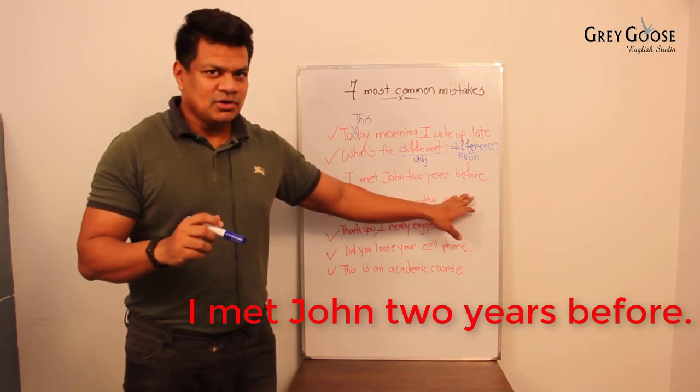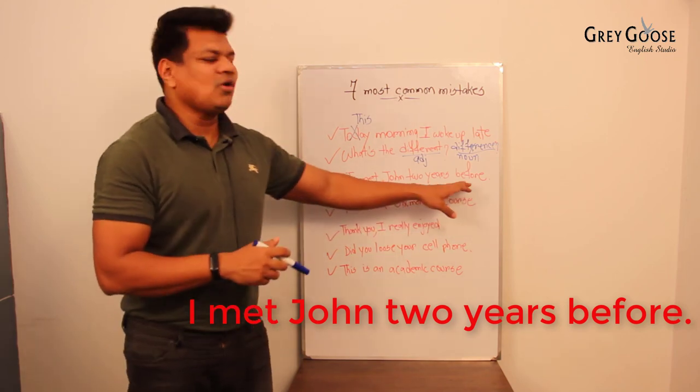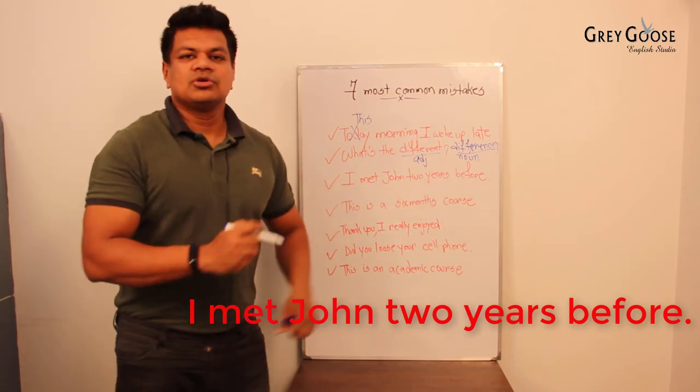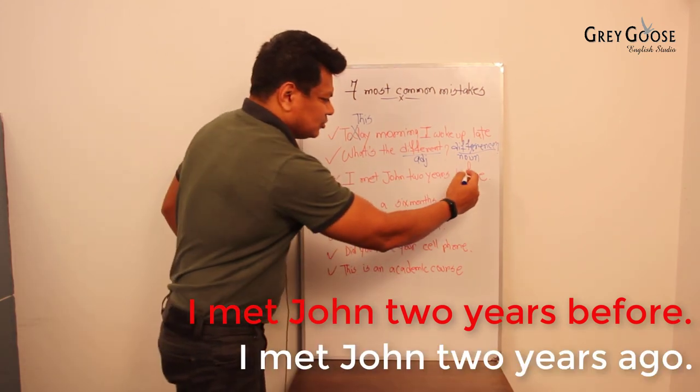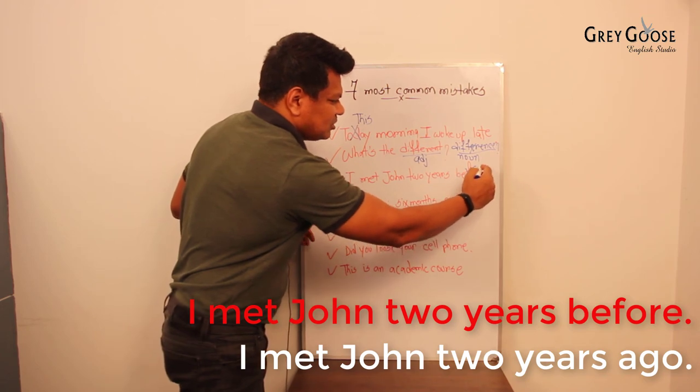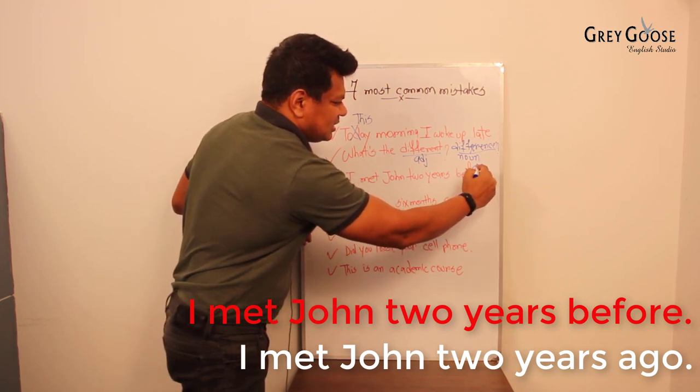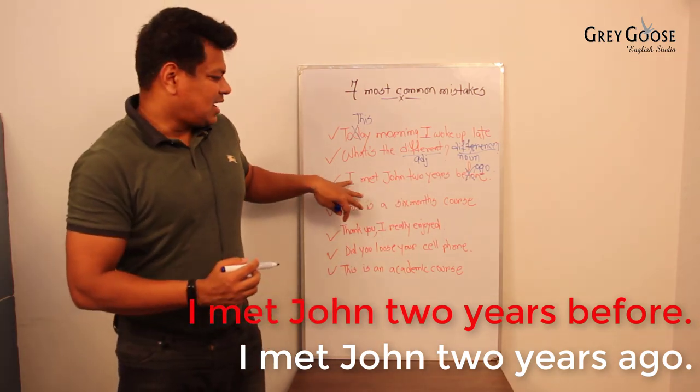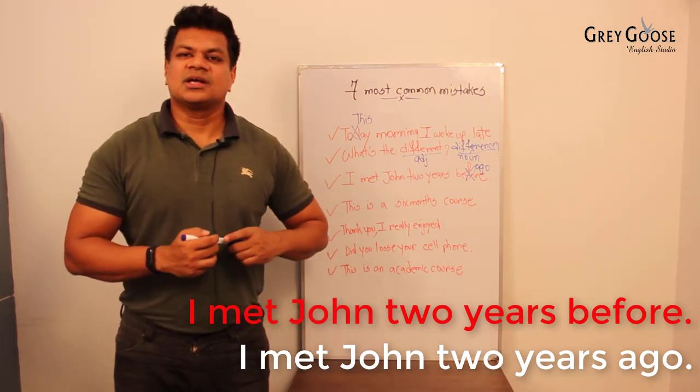then you can use 'before.' Otherwise you cannot, because you cannot end a sentence using 'before.' So it should be 'I met John two years ago'—ago. So that should be A-G-O. Now there you go, you get your correct sentence, and that is 'I met John two years ago.'